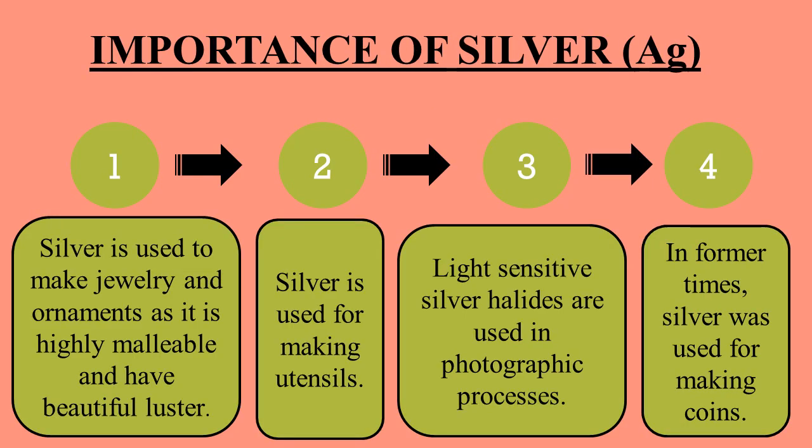Importance of silver (formula: Ag): silver is widely used in making jewelry and ornaments — objects used for decoration. It is highly valuable and has a beautiful luster, meaning it can be shaped easily and has a beautiful shine. Silver is also used for making cooking utensils. Light-sensitive silver halides are used in photographic processes. In former times, silver was used for making coins.